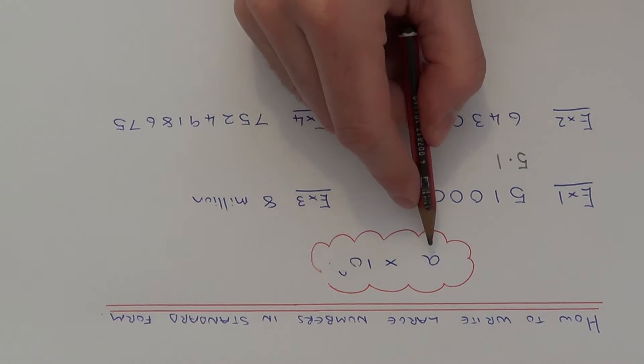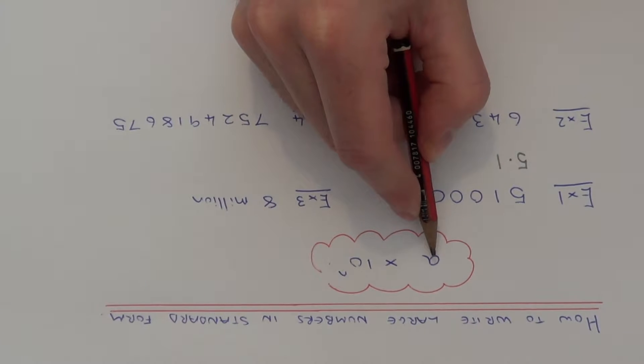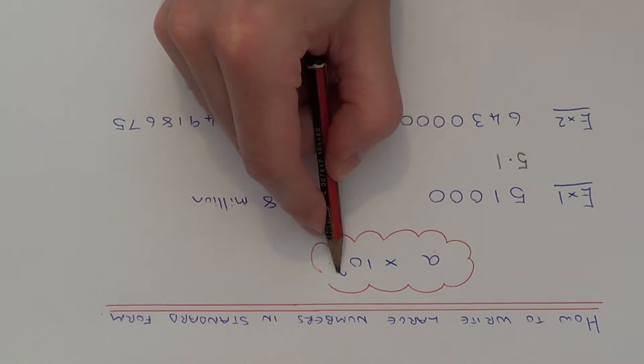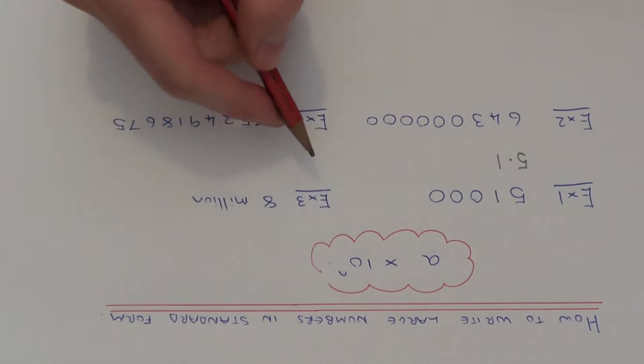A number written in standard index form takes the form A times 10 to the power of N. A is a number between 1 and 10, and N is the amount of times you have to multiply this number by 10 to give you the original number.